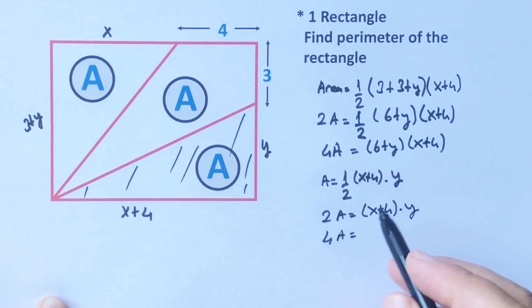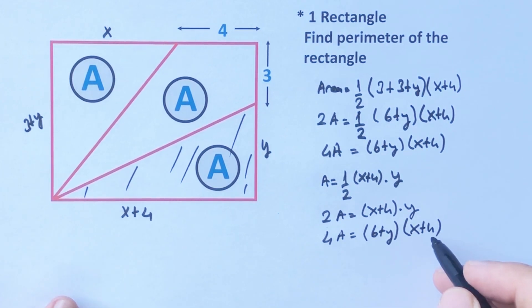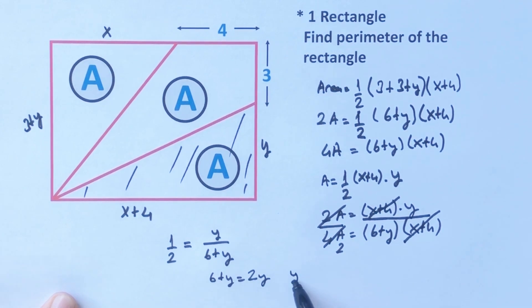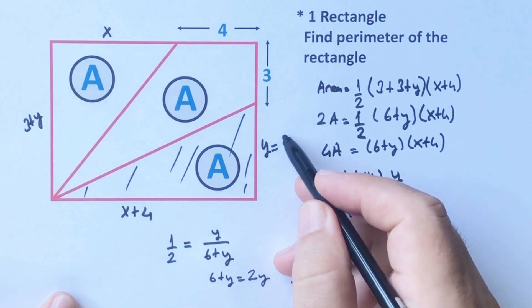Let's write here the first equation. If we divide these two equations by each other, this is the second equation, and therefore one over two equals y over six plus y. So six plus y equals two y. Therefore, y is going to be six units. Y equals six.